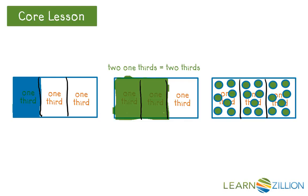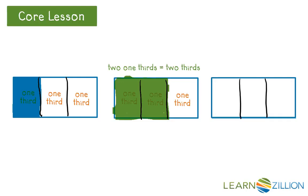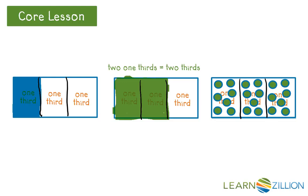Now we're going to look at this rectangle and find out how many equal shares have polka dots. You can see our one whole was partitioned into three equal shares, so each region is referred to as one-third. Now I need to count how many thirds have polka dots: one-third, two-thirds, three-thirds of the whole are covered with polka dots.